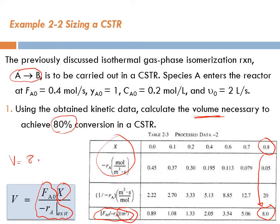Therefore, the volume would simply be 8 cubic meters times the conversion, which is 0.8. And the answer would be 8 times 0.8, it's 6.4 cubic meters. So we have the volume is 6.4 cubic meters.